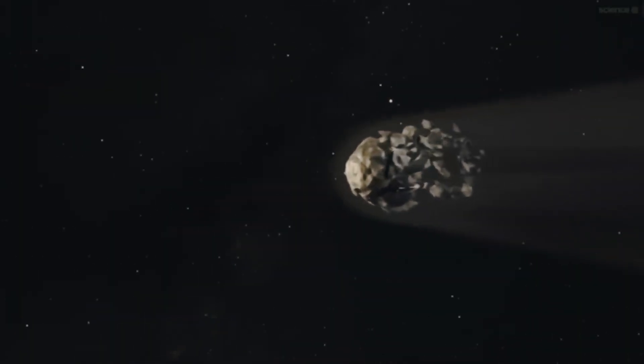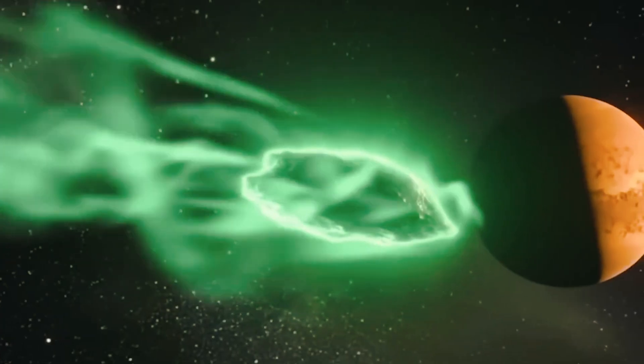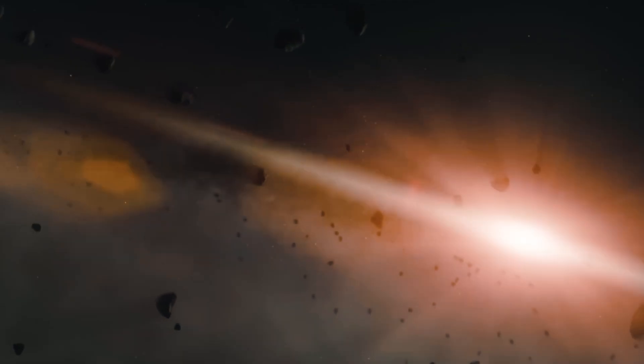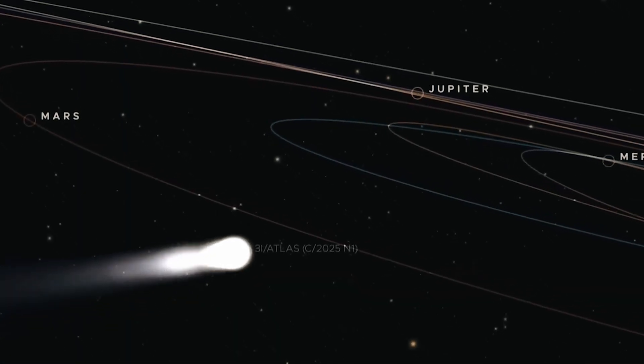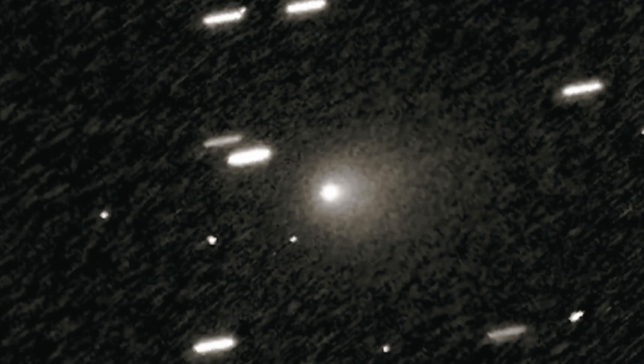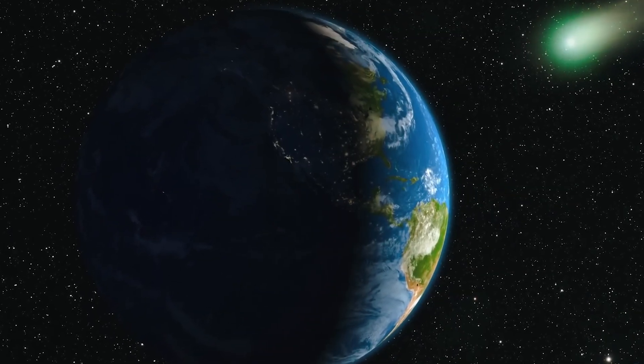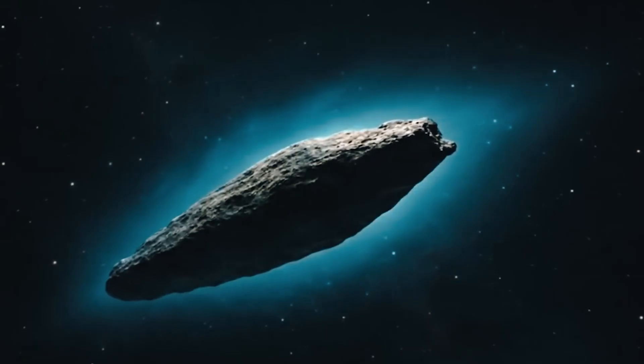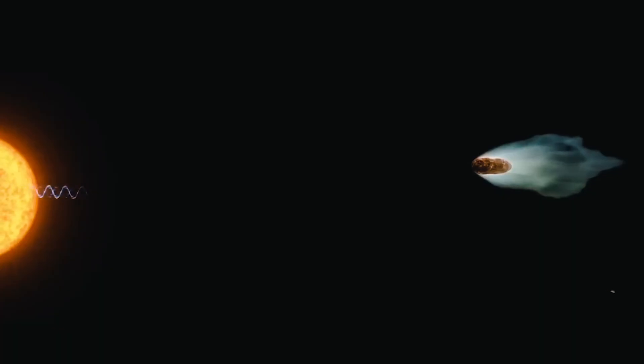What scientists are seeing from 3i Atlas is anything but ordinary. Most comets stay quiet this far from the Sun, yet this one is already bursting with intense outgassing. Even more astonishing is its chemistry. The usual balance between carbon dioxide and water is flipped. Instead of water leading the charge, carbon dioxide seems to be fueling the comet's activity.